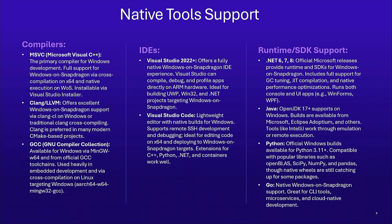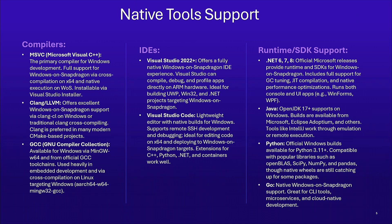For IDEs, Visual Studio 2022 is natively supported. You can even have Visual Studio Code running natively on our platform. Similarly, for runtime SDKs, .NET 6, 7, and 8 are all working natively on ARM. On the Java side, OpenJDK 17+ supports the ARM platform. Python 3.11 onwards has dedicated ARM support. Even Go has native Windows on Snapdragon support — it's a great CLI tool already part of the native ecosystem. So you are all covered for the compiler and toolchain side. You're ready to build.